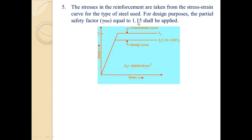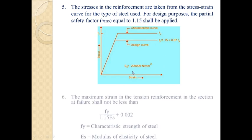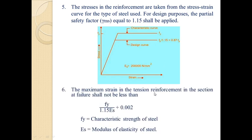For steel, the partial safety factor taken for design purposes is 1.15. The maximum strain in the tension reinforcement at the section at failure shall not be less than Fy/(1.15·Es) + 0.002, where Fy is the characteristic strength of steel and Es is the modulus of elasticity of steel. This assumption ensures ductile failure, in which the tensile reinforcement undergoes a certain degree of inelastic deformation before concrete fails in compression.